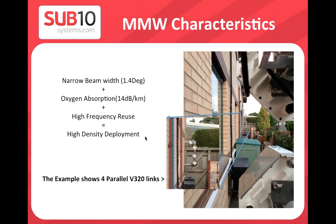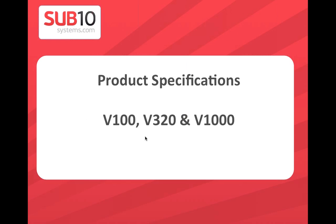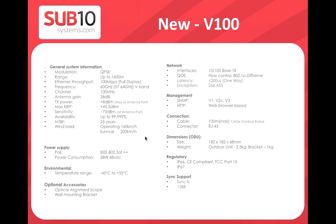Here is another high-density example: four links with 10–15 centimeters maximum between units, all running concurrently. The V100 is our new platform introduced around spring this year. It operates at 60 GHz with a 100 MHz channel size.